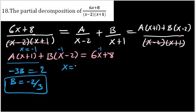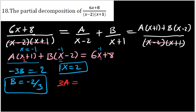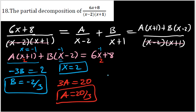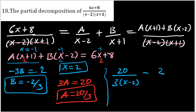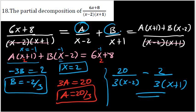For case 2, set x = 2 to eliminate B. The B term becomes 0, and A(2+1) = 3A. On the right: 6(2)+8 = 12+8 = 20. Dividing both sides by 3 gives A = 20/3. So the decomposed form is (20/3)/(x-2) + (-2/3)/(x+1). The main step is finding A and B, since the denominator factors are linear.